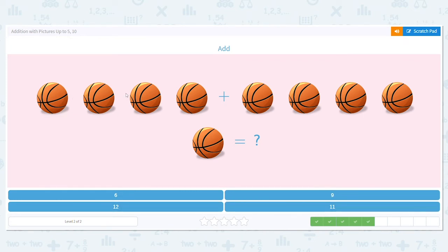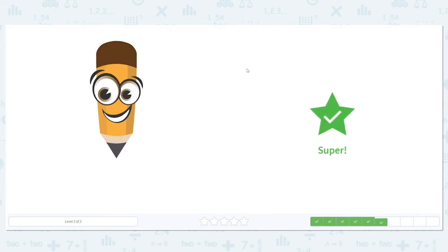1, 2, 3, 4, 5, 6, 7, 8, 9. So 4 plus 5 equals 9. Good job.